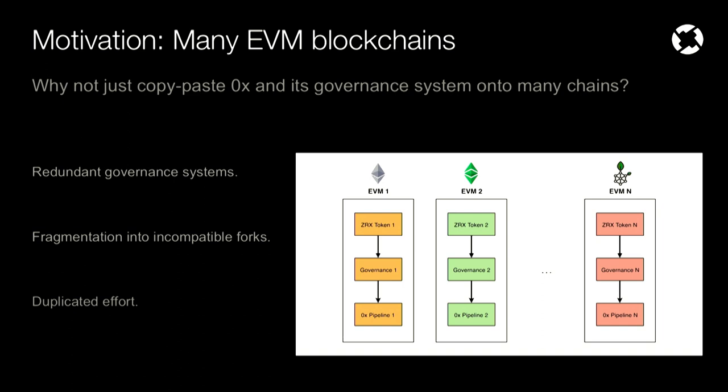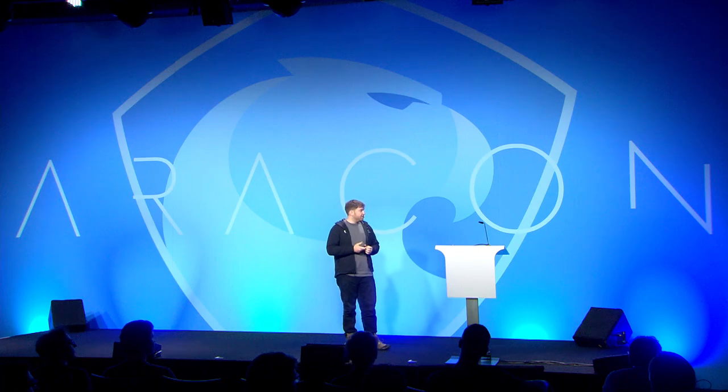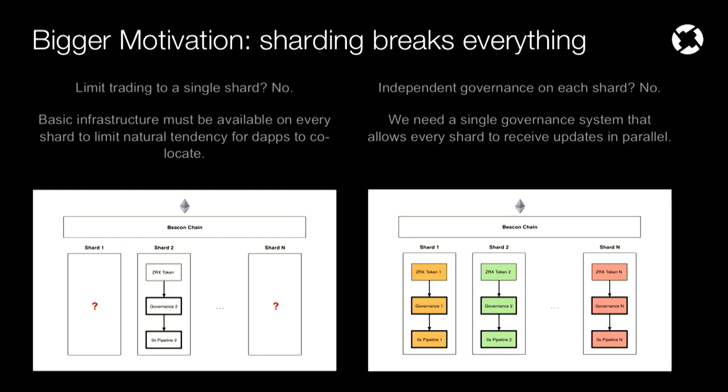If you have different governance systems, it's very likely they may choose to go in different directions. What you end up with are incompatible forks or different versions of the pipeline, which creates an inconsistent user or developer experience. And if you have all these different versions of the pipeline, it creates duplicated effort because you have to have different developer teams maintaining all these different copies. This was the initial motivation for thinking about cross-blockchain governance. But when it became clear that sharding is the direction the space is going, it became much more urgent to start thinking about how to build these cross-blockchain governance systems.